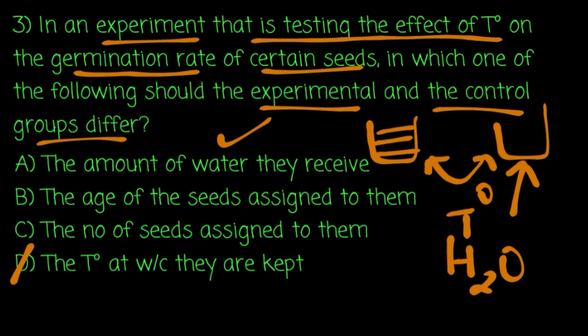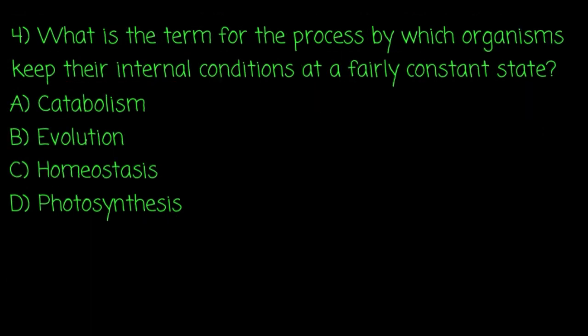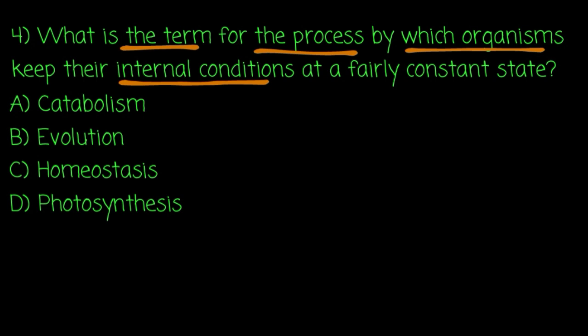The age of the seeds can be controlled, and the number of seeds can be controlled. What is the term for the process by which organisms keep their internal conditions at a fairly constant state?